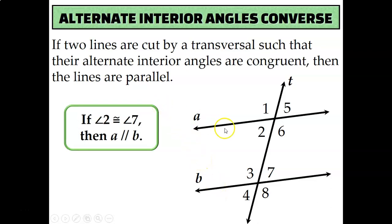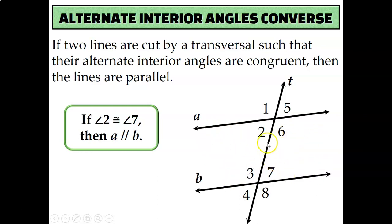We also learned that if the alternate interior angles are congruent, then the lines are parallel. Alternate means that they're on opposite sides of the transversal, and interior means that they're in between the two parallel lines. For example, if I knew that angle 2 and angle 7 were congruent, I would be able to conclude that line A is parallel to line B because of the alternate interior angles converse.